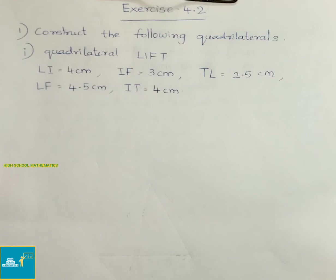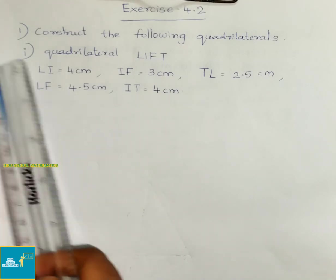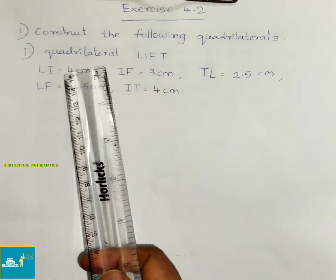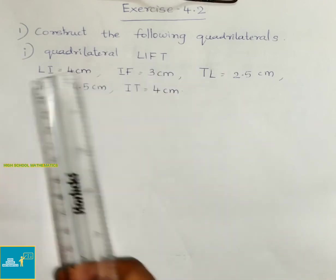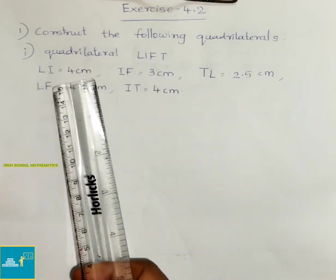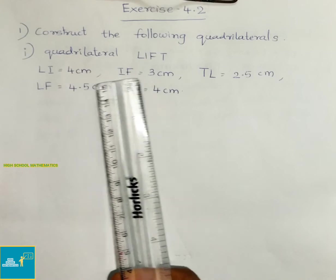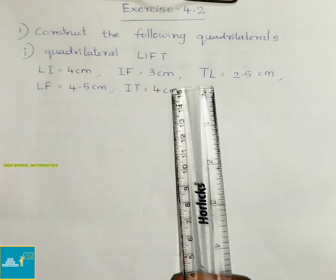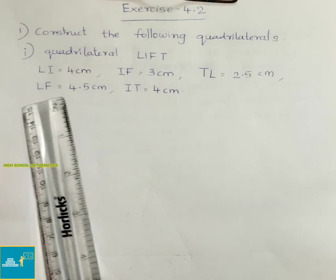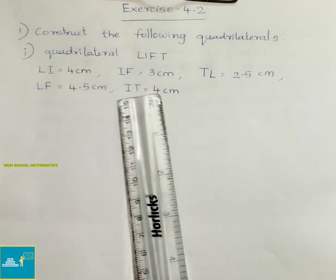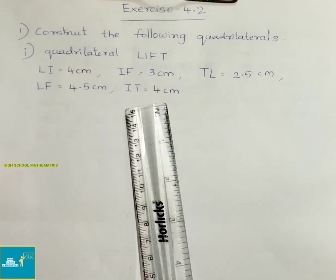Now Exercise 4.2, Question 1: Construct the following quadrilaterals. Construct quadrilateral LIFT where LI equals 4 cm, IF equals 3 cm, TL equals 2.5 cm, LF equals 4.5 cm, and IT equals 4 cm.